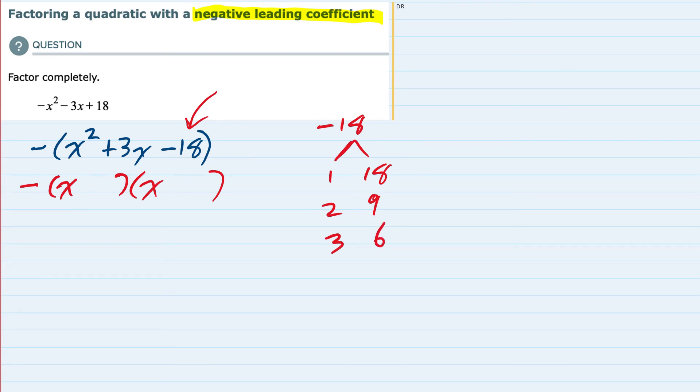The signs would have to be different in order to multiply and get a negative 18, but remember that we want these numbers to add up to be a positive 3x. So numbers that multiply to be a negative 18, but add up to a positive 3x.